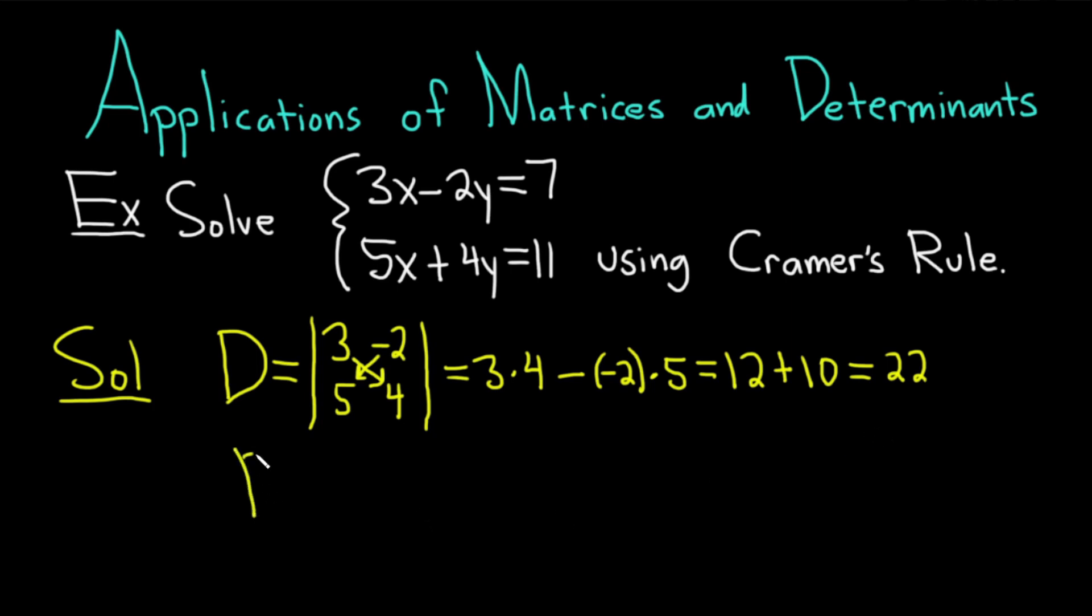Let's find big D sub x. To find big D sub x, what we can do is we look again at our system of equations. And you basically cross out the x's. And a really good memory trick is whenever it's big D sub x, you cross out the x's. And you want to replace them with the 7 and the 11. So that goes in the first column. 7 and 11. And then you keep the second column, negative 2, 4.